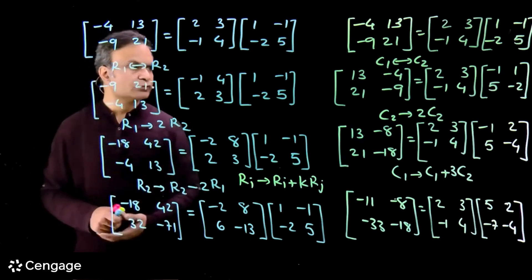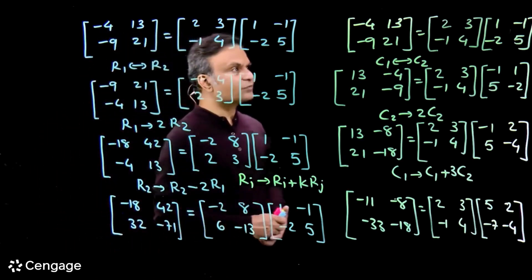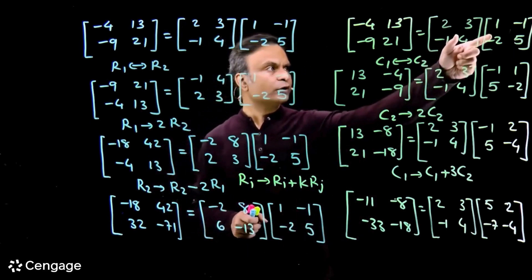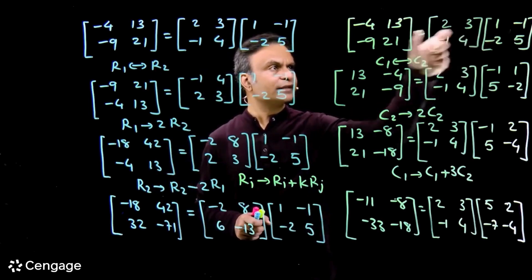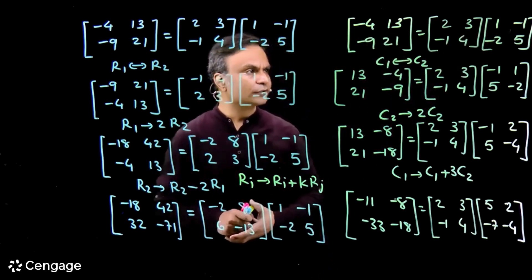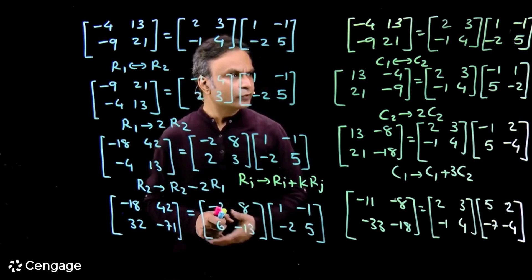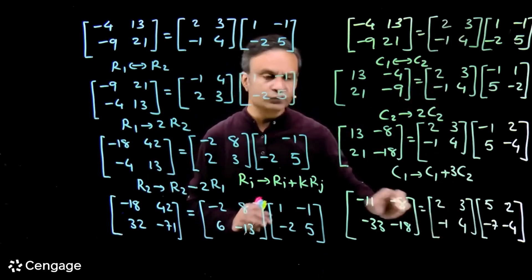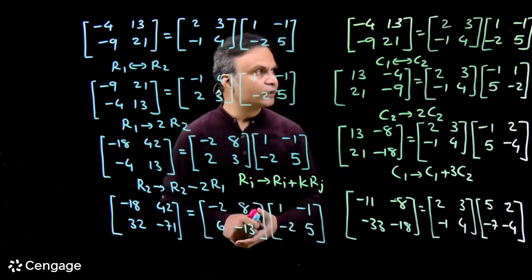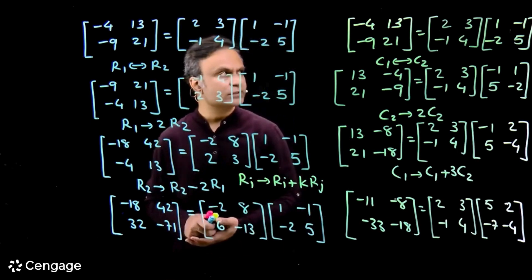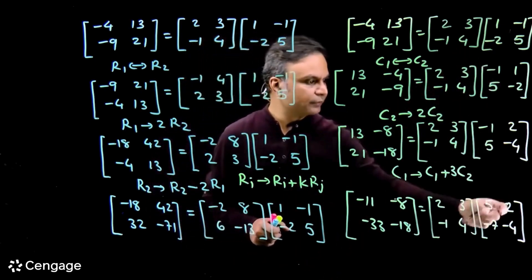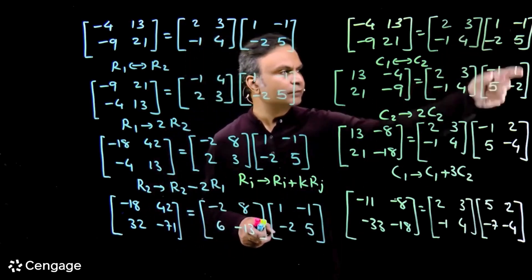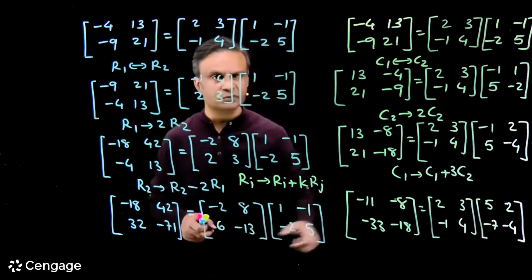Now we can do column transformations, but we do column transformations in the post-multiplier. Here we have the product of these two matrices and this is their product matrix. I keep the pre-multiplier matrix intact, and we do column transformations simultaneously in the post-multiplier matrix and on the LHS matrix.